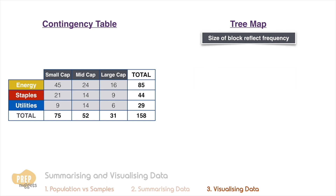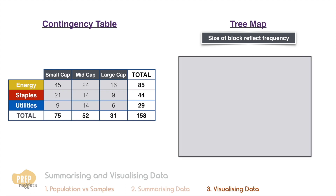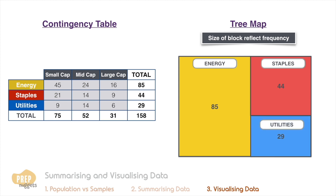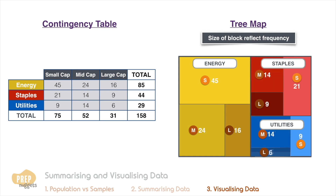Another approach to visualize a contingency table is to use a tree map, where block size is used to reflect frequency. We first draw a block to reflect the total number of observations and segregate it based on one attribute — for example, by industry, where each industry has its own primary color. Obviously energy has the largest block, as there are the most number of energy stocks. Next, we segregate based on the other attribute, which in this case is market cap, where darker colors are used to represent large cap stocks.